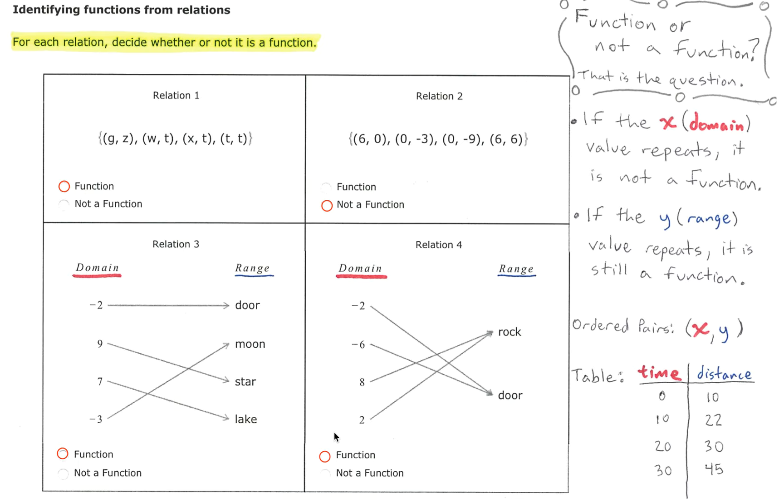So you might be wondering how do I know if I select not a function when looking at a mapping. Well take for example here if we had this arrow from negative 2 pointing at door and also had another arrow coming out of negative 2 to point at rock. That would not be a function because two arrows would be coming out of one domain value.